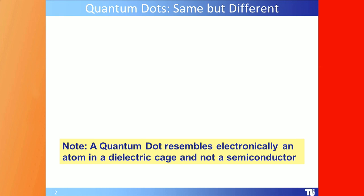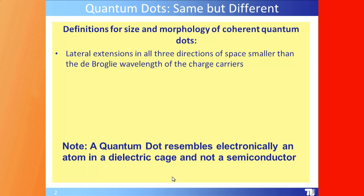I gave this talk the title of a US movie: 'Same but Different.' Electronically, a quantum dot resembles an atom — not a semiconductor — an atom in a dielectric cage, and that is the most important basis for the special properties of quantum dots.